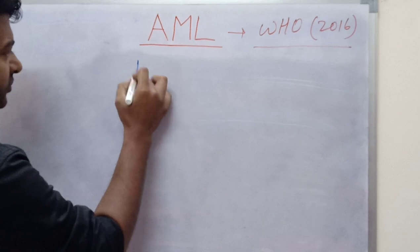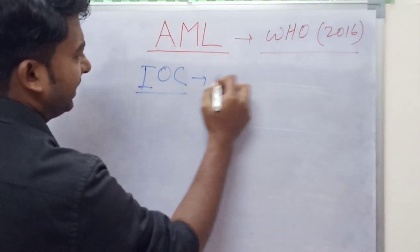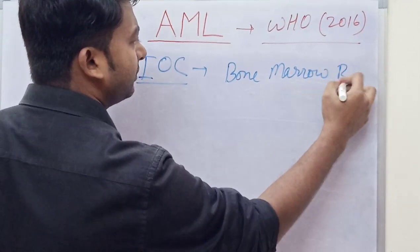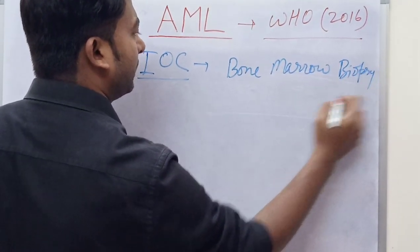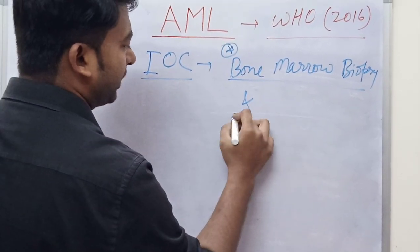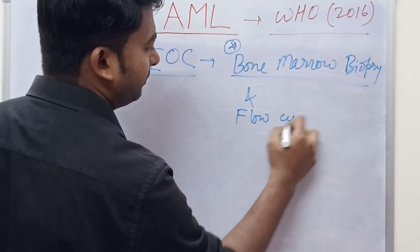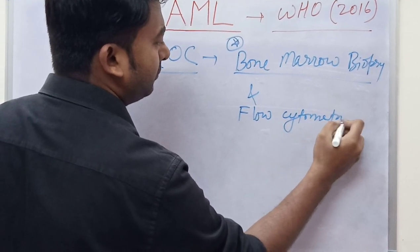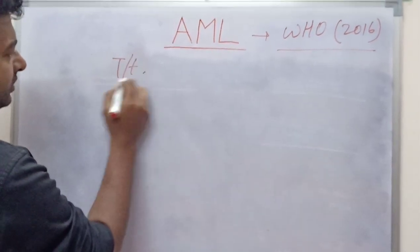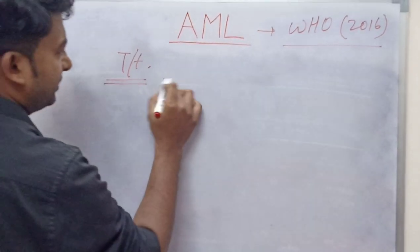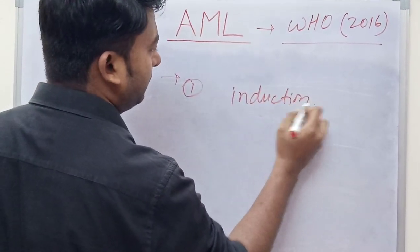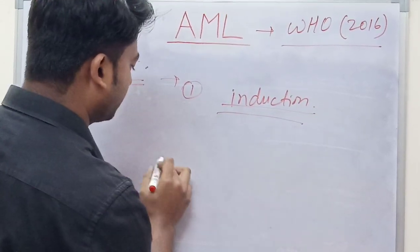The investigation of choice in case of AML is bone marrow biopsy — this is a PG exam question. We can also do flow cytometry. The treatment includes two phases: first the induction phase, and second the consolidation phase.